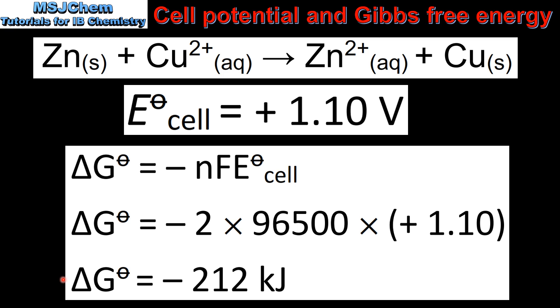This gives us a change in Gibbs free energy of negative 212 kilojoules. A negative value for the change in Gibbs free energy indicates the reaction is spontaneous.